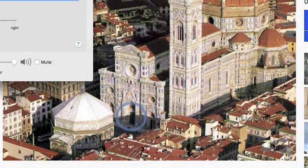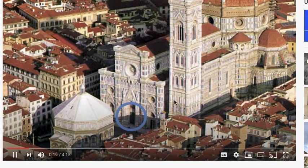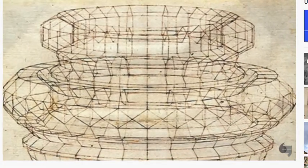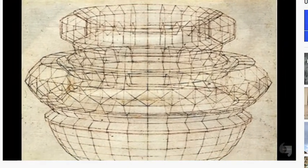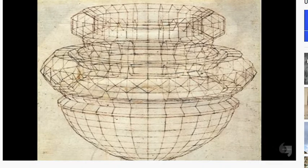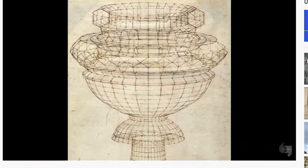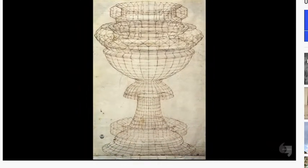Brunelleschi's experiment demonstrated that linear perspective could produce an incredibly realistic illusion of three-dimensional space on a two-dimensional surface. So this notion that we can actually develop a system that would be relatively easy to follow but highly accurate that could translate the volumetric world that we move through through time onto a frozen two-dimensional surface is really an extraordinary achievement.